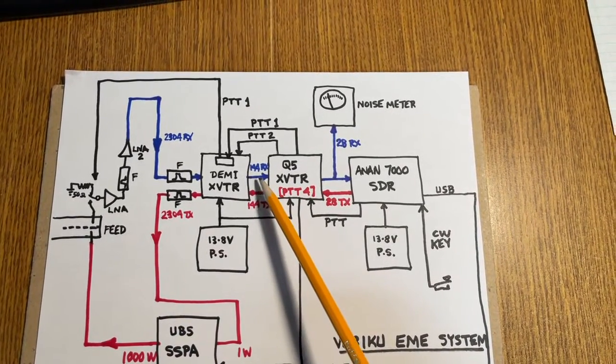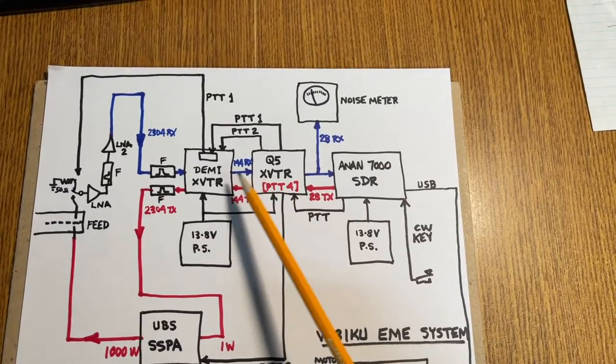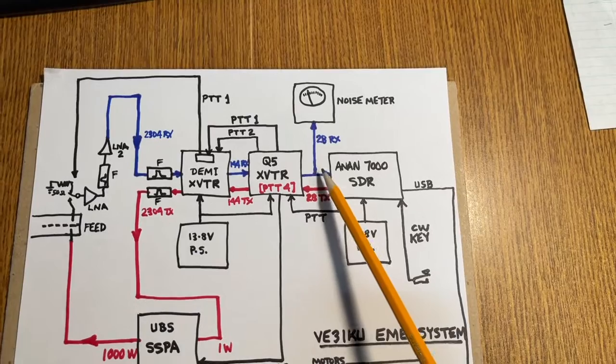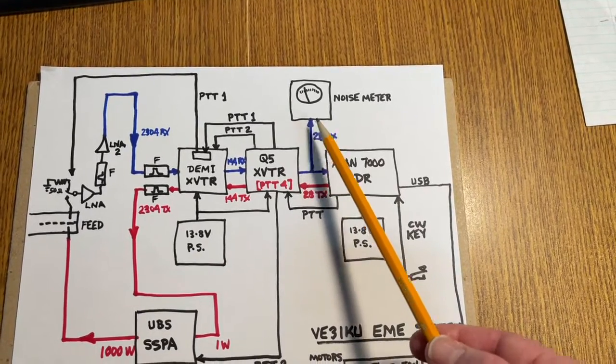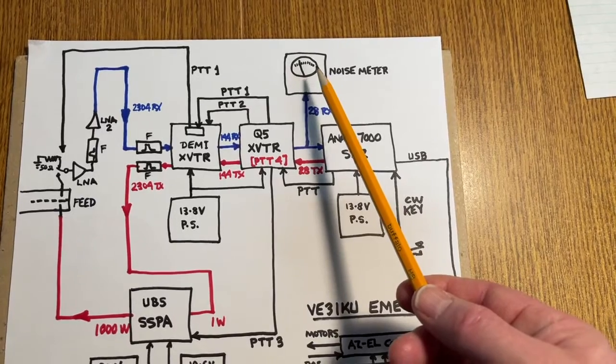The 144 MHz received signal then goes into the Q5 transverter and that converts it to 28 MHz IF, and a portion of that is tapped off to the General Radio Noise Meter.